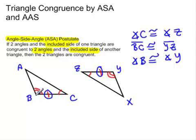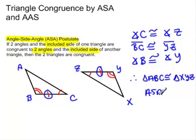This allows us to have an angle, a side, and an angle. Therefore, we know that triangle ABC is congruent to triangle XYZ by our angle-side-angle postulate. That's the way that that one works.